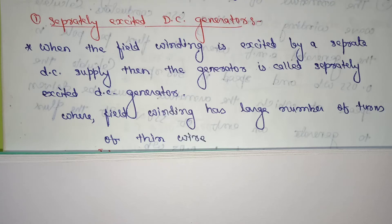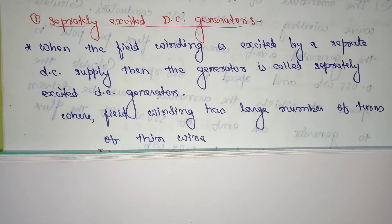Hi friends, today I am going to discuss very important topics regarding DC generators. We know that there are two types of DC generators, classified according to their method of field excitation: first, the separately excited DC generator, and second, the self-excited DC generator. Today we'll discuss the separately excited DC generator — the theory part and the derivation part.